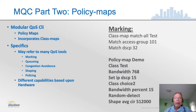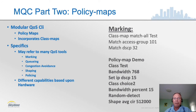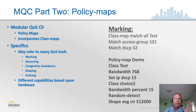In a policy map, depending on the interface you're applying it to, you can apply marking, queuing, congestion avoidance, shaping, and policing. There are different capabilities based on the hardware — not all hardware can do everything identically. When referring to a class map inside a policy map, you must say 'class' not 'class-map,' or you'll leave the policy map configuration and get back into class map configuration. The name of the class map is case sensitive.